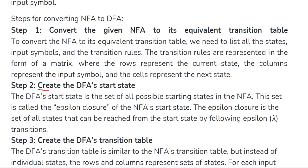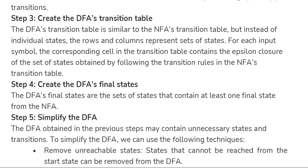In step two, create the DFA start state. Whatever may be the initial state of the NFA, the same state will be the DFA start state, or you can call it the initial state. Now after identifying the initial state of the DFA, we will start constructing the DFA transition table from the given NFA transition table — with the help of the NFA transition table, we are constructing the DFA transition table.